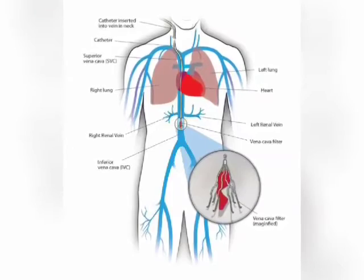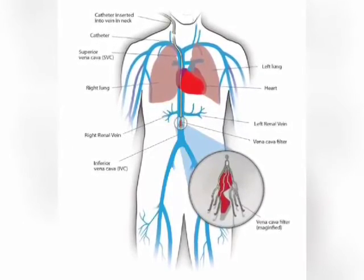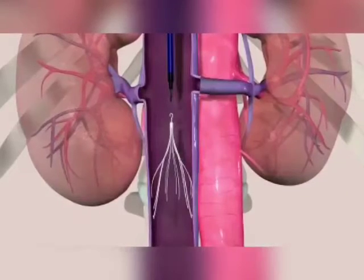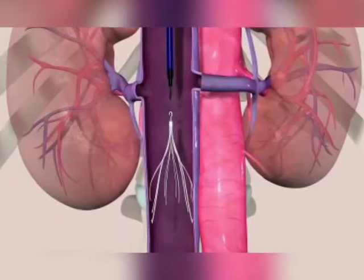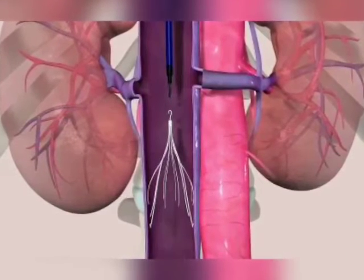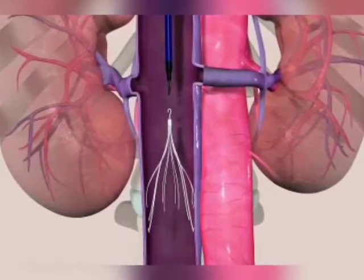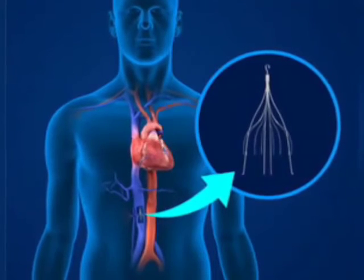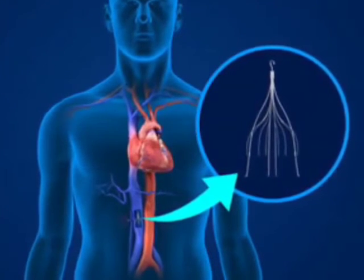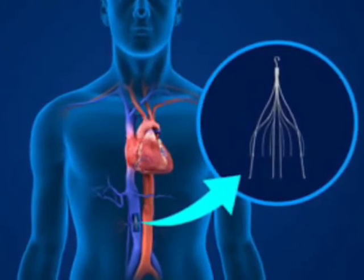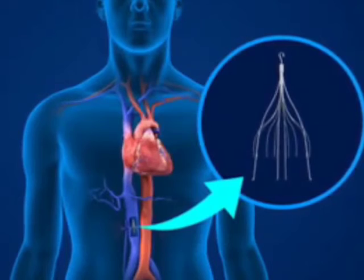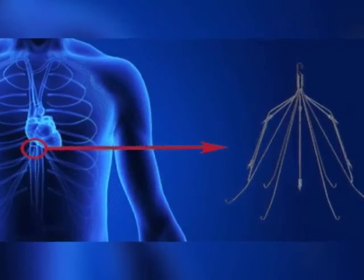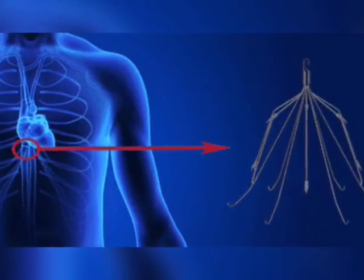A variety of conditions can increase your chance of getting DVT, such as recent surgery, which decreases your mobility and increases inflammation in the body, which can lead to clotting. Medical conditions that limit your mobility, such as injury or stroke. Long periods of travel which limit your mobility. Injury to a deep vein in the leg. Pregnancy. Cancer treatment. Smoking. Obesity. Or older age.